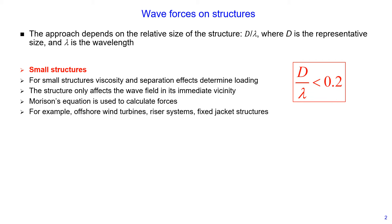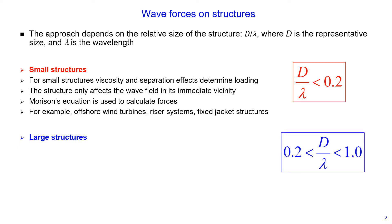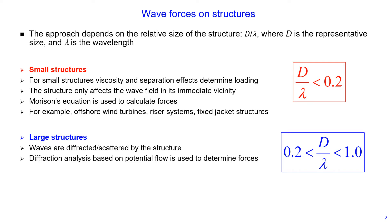There are also large structures, defined when the ratio of representative size to wavelength is between 0.2 and 1. For this type of structure, waves are diffracted or scattered by the structure, and diffraction analysis based on potential flow is used to determine forces. An example is wave forces on very large concrete gravity platforms.